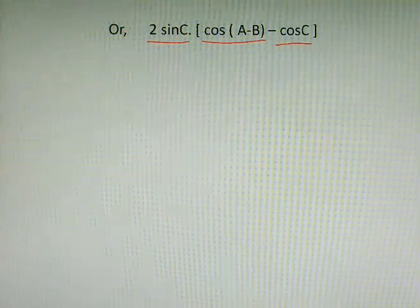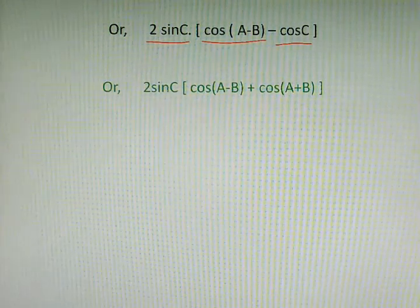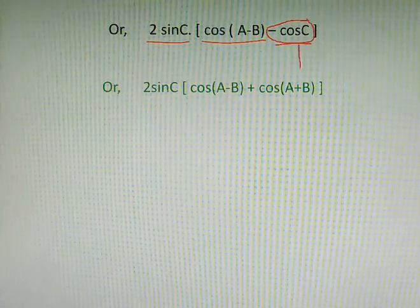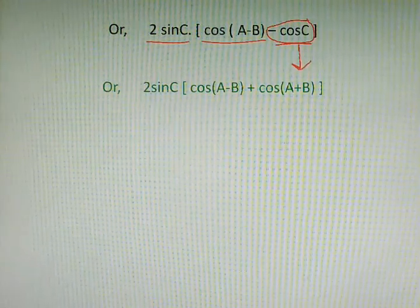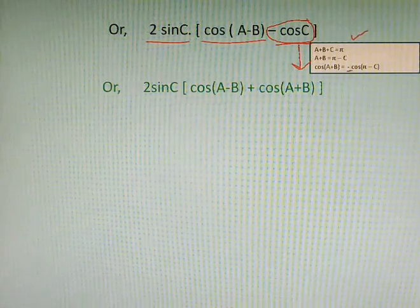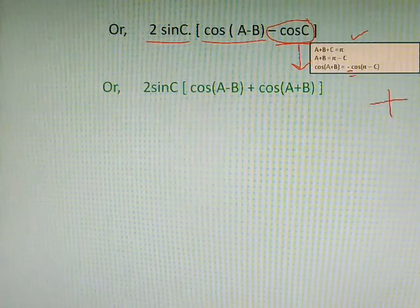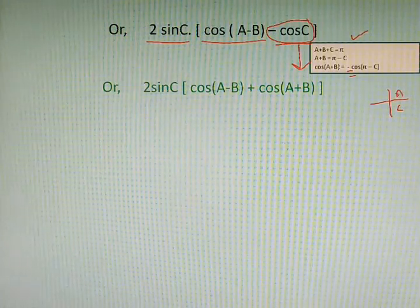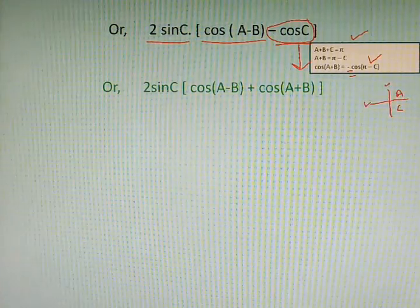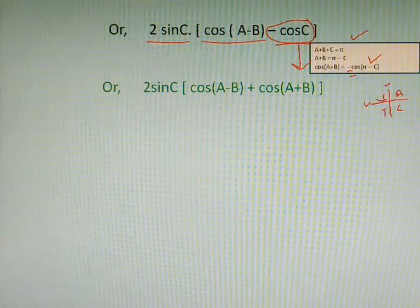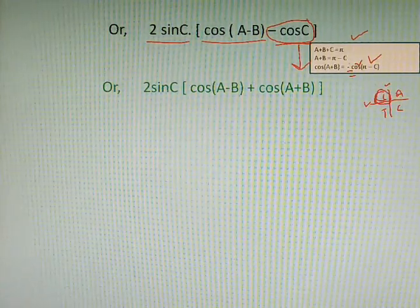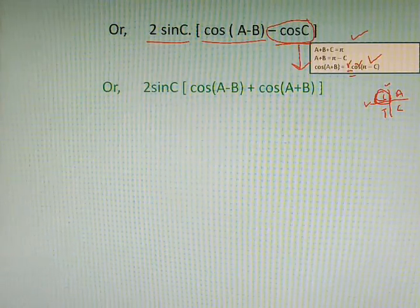After this, following the similar way that we have done for sin(A+B), we can convert -cosC in the form of cos(A+B). But there is a little change here; we have written minus, and that is because of the CAST rule. Since the angle is between 90 degrees and 180 degrees, but according to the CAST rule, only sine can be positive here, so cosine will be negative. That's why we have written minus here. So -cosC...